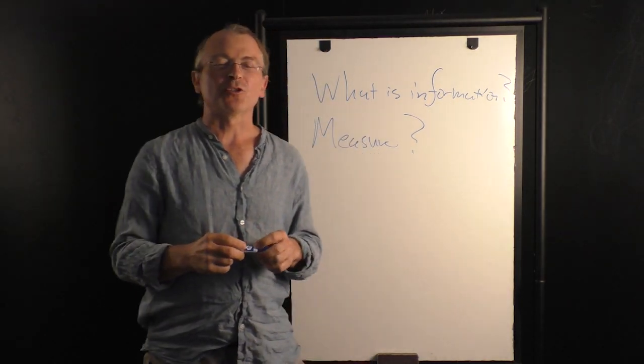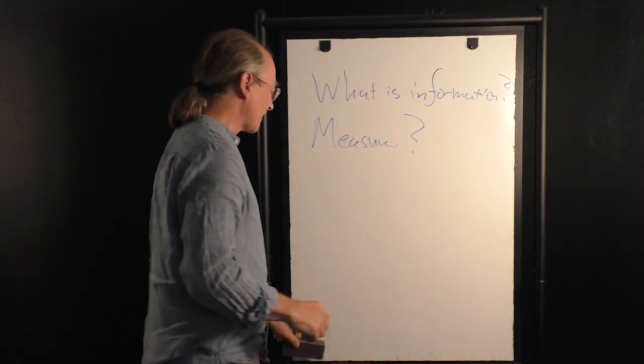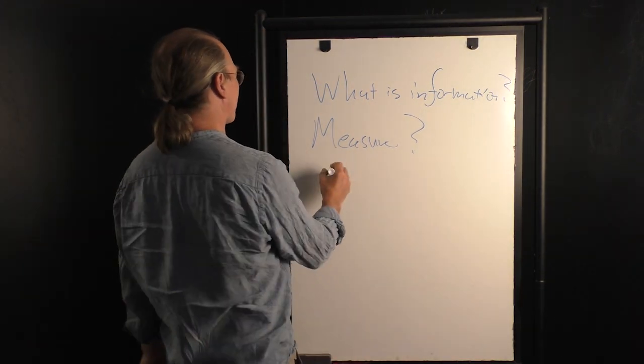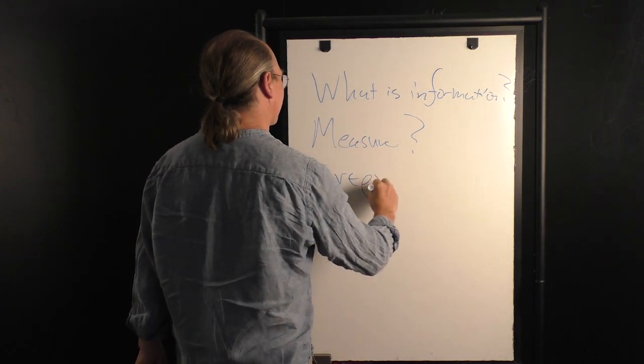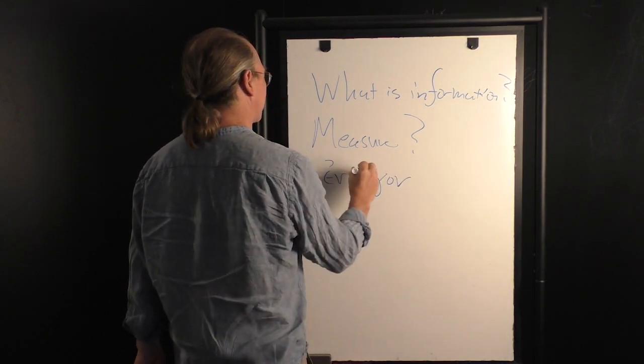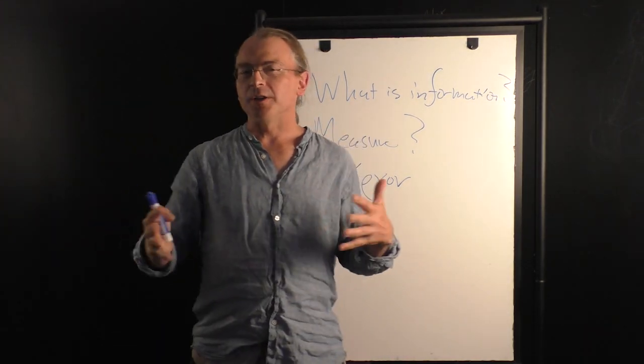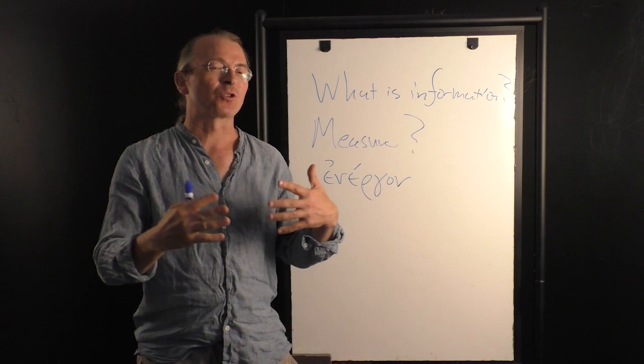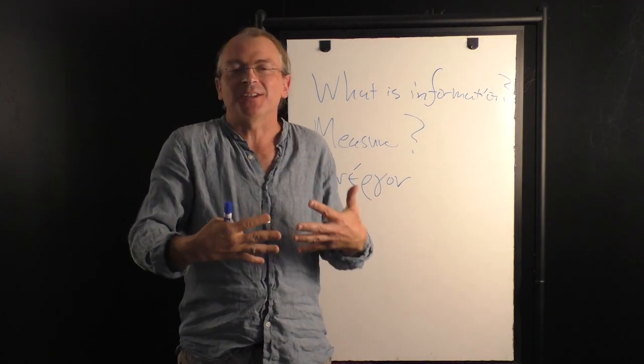A nice way to think about this is in terms of energy. So energy is an ancient concept. It comes from Aristotle. En-ergon. En-ergon is the internal work. Ergon is work. It means also a worker. And en-ergon is work that is somehow inside a thing.